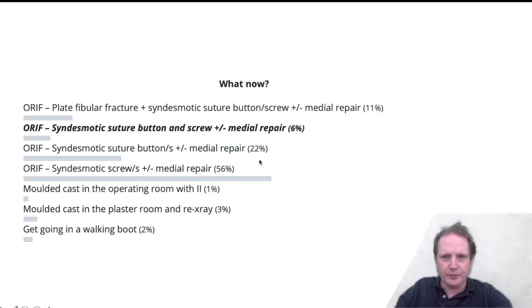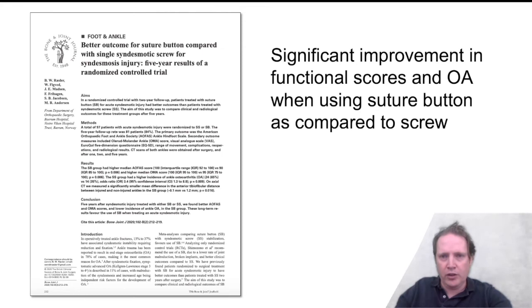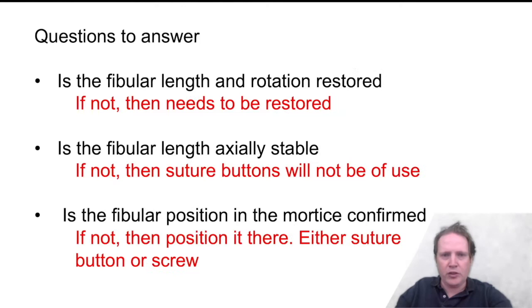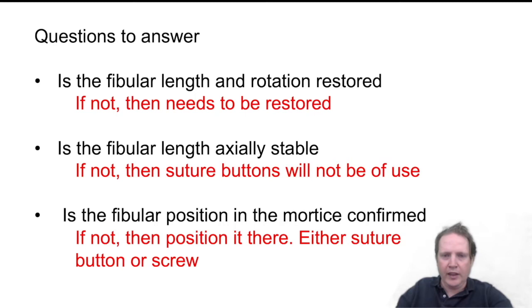The RCT published this year did show significant improvement in functional scores and osteoarthritis using a suture button versus a capatio screw, but in that study fibula length had been restored and the construct was stable because the fibula had been plated. The questions you need to ask yourself: is the fibula length and rotation restored? If not, this needs to be restored. If the fibula is stable — i.e., the fracture has been fixed and cannot shorten — then suture buttons will not be of use because they still allow axial movement of the fibula.